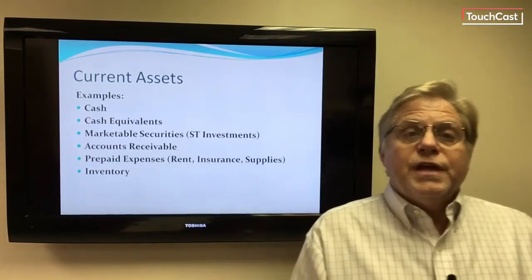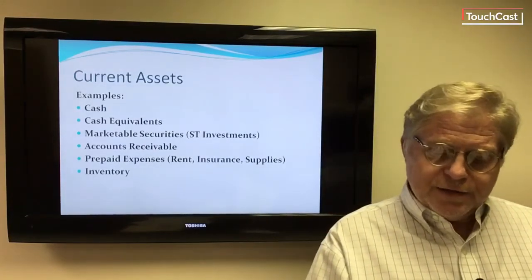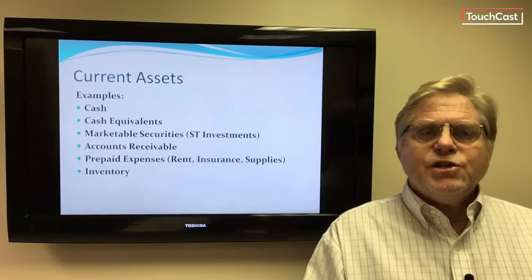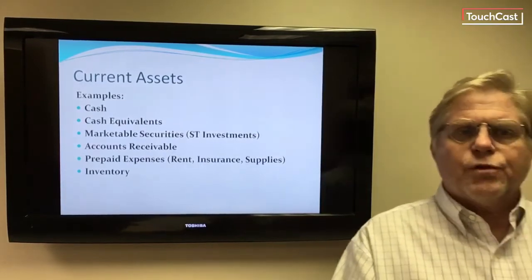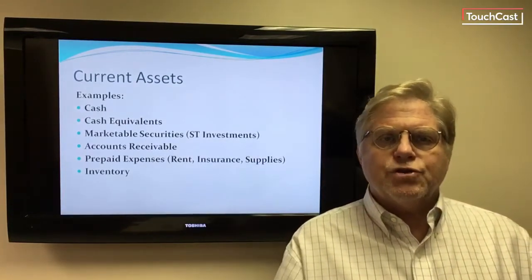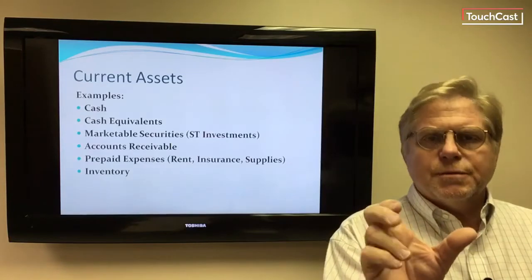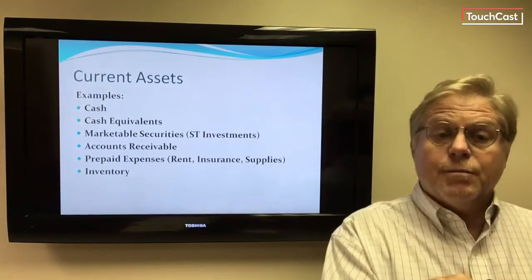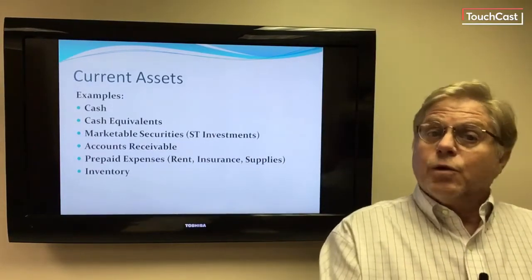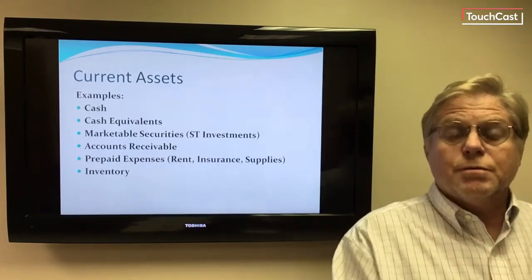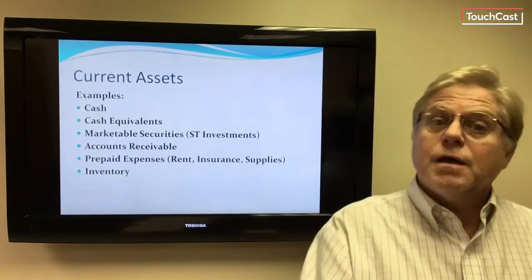Current assets include, in roughly the order found on the balance sheet: cash equivalents, which represent very short-term investments — a temporary storage place for excess cash. Cash equivalents are short-term investments with a remaining term to maturity of less than 90 days at the time the company buys them. Marketable securities also represent short-term investments, but include those with a maturity longer than 90 days but less than one year.